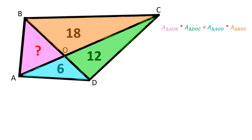To solve this problem we need to prove this formula: a convex quadrilateral is divided into four triangles by its diagonals, so that the product of the areas of the two opposite triangles is equal to the product of the areas of the other two triangles. The product of the areas of the pink and green triangles is equal to the product of the areas of the blue and orange triangles.